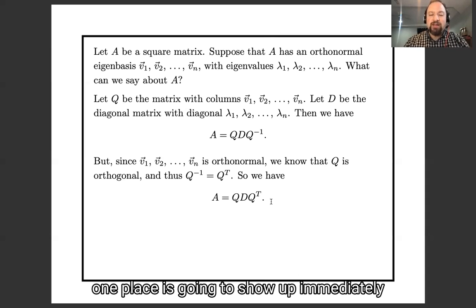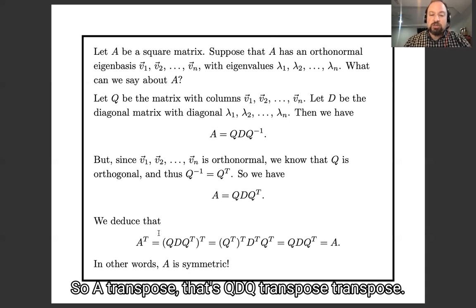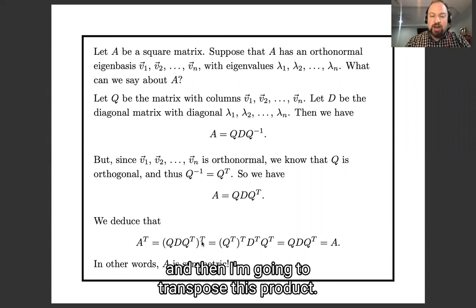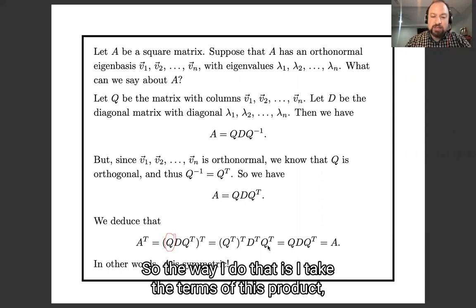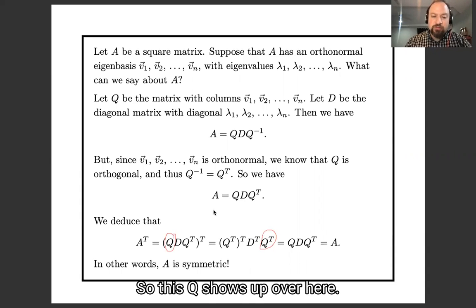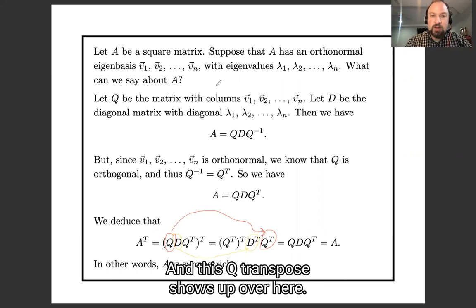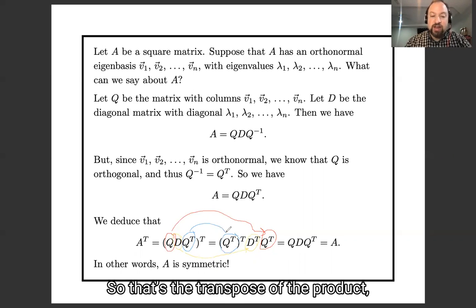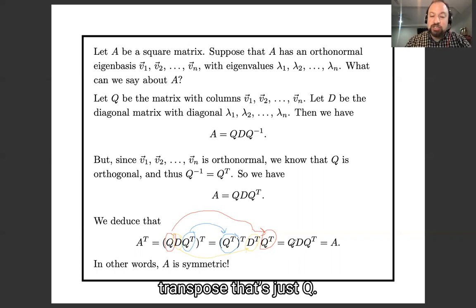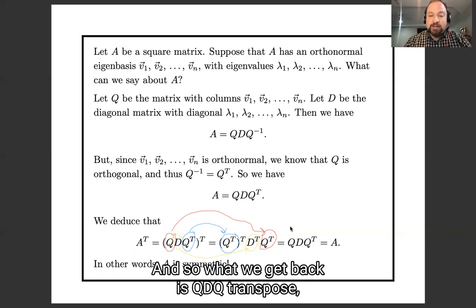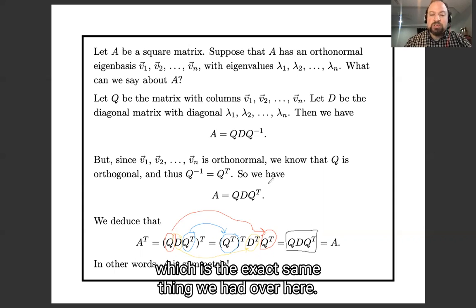One place this shows up immediately is if we take the transpose of this formula. A transpose equals (Q D Q transpose) transpose. The way I do that is I take the terms of this product and write them with transposes in the other order. So Q shows up here, D shows up here, and Q transpose shows up here. Then Q transpose transpose is just Q, and so what we get back is Q D Q transpose, the exact same thing we had before.